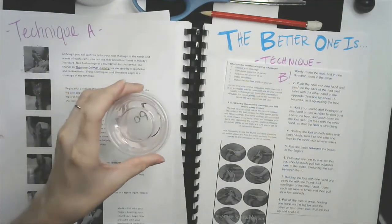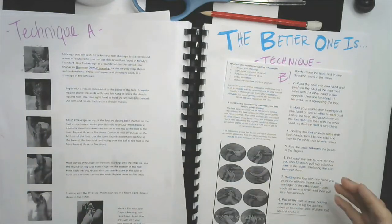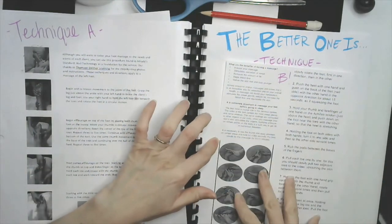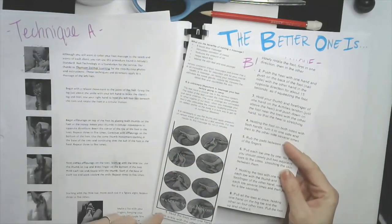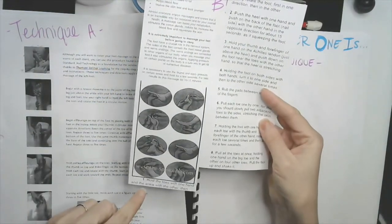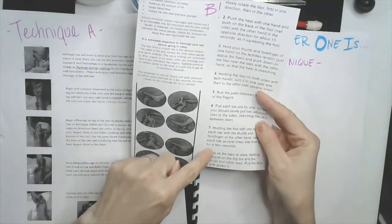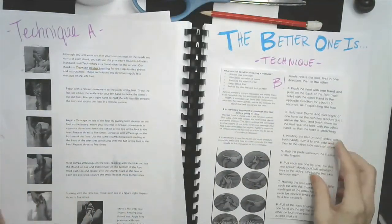Then you take a little bit more oil - take oil as you go, however much you need - and then do technique B. Your technique B starts down here with number one, then two, and all the way down to eight.